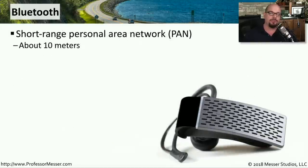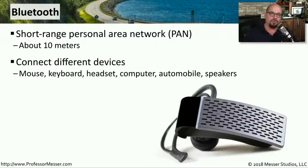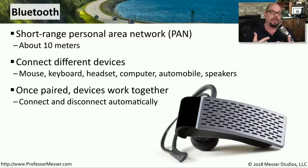Bluetooth is what we call a personal area network, or a PAN. It allows us to connect to devices that are in our local area, usually about 10 meters from us, so we can connect keyboards, headsets, and speakers all in our local area. To use a Bluetooth device, we have to initially pair with it. So if you're using Bluetooth in a car, you would pair with the car. Then when you leave the car and come back, the car and the phone will remember that they once paired together, and you don't have to go through the pairing process again.